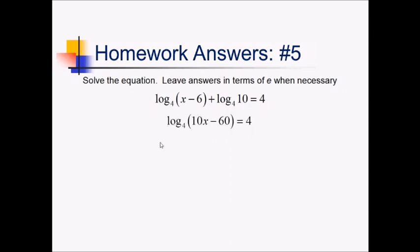Now I'm going to raise base 4 to both sides of the equation. So that cancels the log on the left side, leaving me with 10x minus 60. On the right side, I've got 4 to the 4th. So that means I've got 10x minus 60 equals, let's see, that's 256.